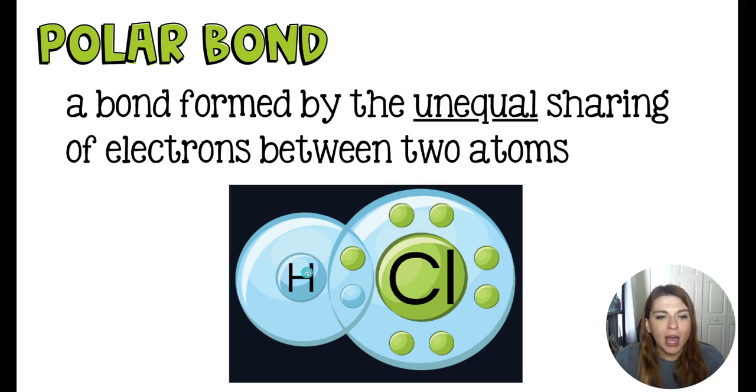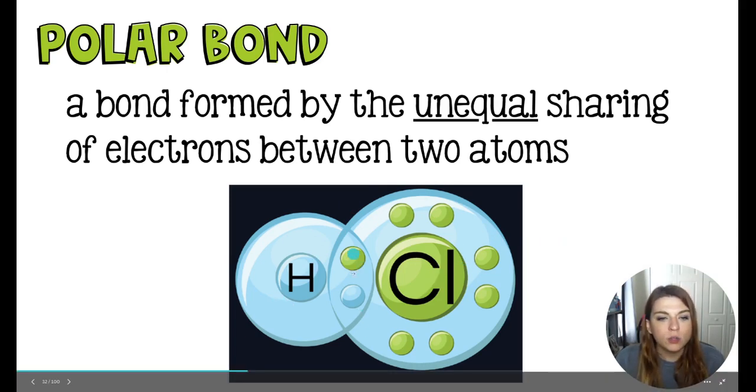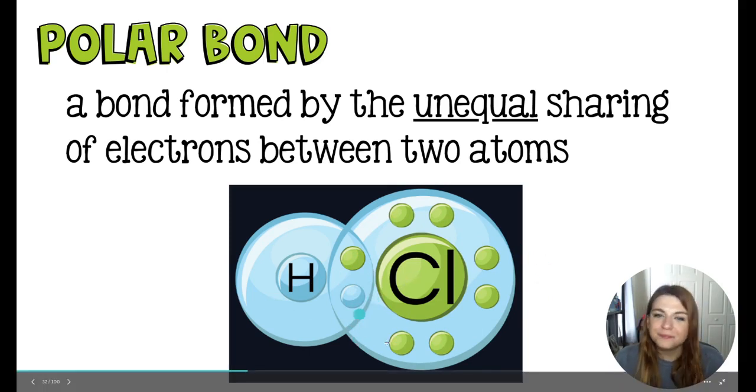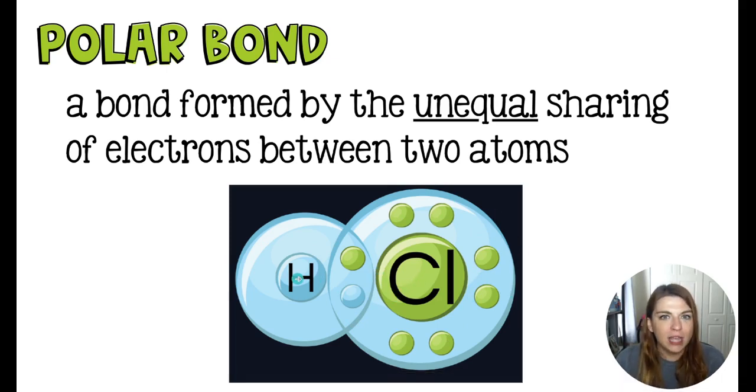We know chlorine has a very high electronegativity, much higher than hydrogen. So chlorine is going to, the green electrons belong to chlorine and the blue one belongs to hydrogen. Chlorine says, uh-uh-uh, that's really my electron. Nice try, hydrogen.